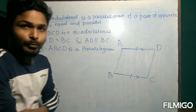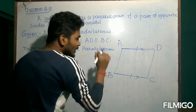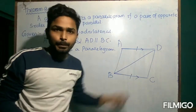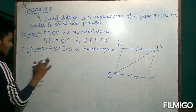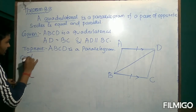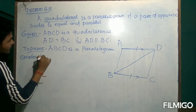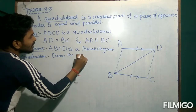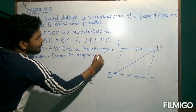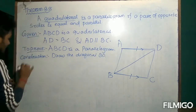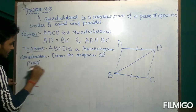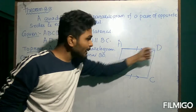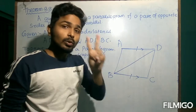In order to prove it, we have to first draw a diagonal. Let us say we construct the diagonal BD. Construction: Draw the diagonal BD. Now, whenever we draw the diagonal BD, this quadrilateral is divided into two triangles.